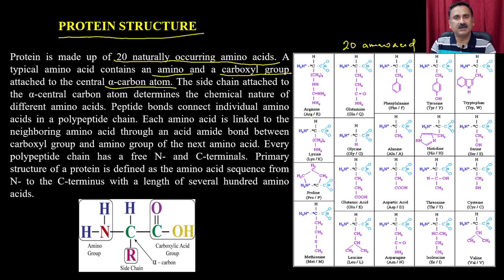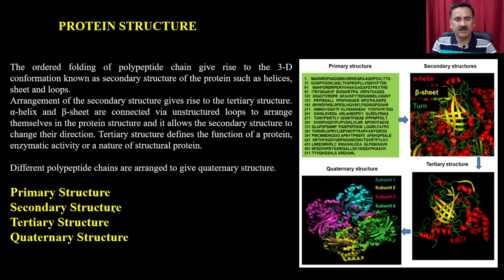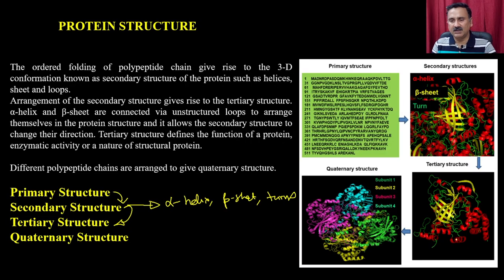All these amino acids join together with the help of peptide bonds, constituting the primary structure — defined as the amino acid sequence from the N to C terminus. The primary structure folds into secondary structures, including alpha helices, beta sheets, and turns, which can form super-secondary structures. These secondary and super-secondary structures come together to give the tertiary structure.